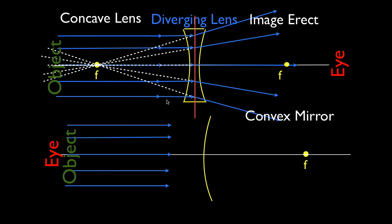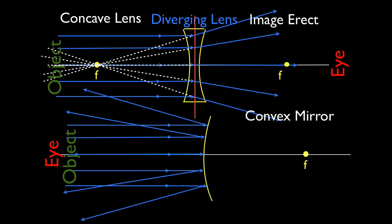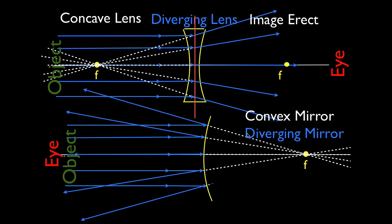Now let's do the same thing with the convex mirror. The light rays strike that mirror and they're reflected so that they diverge away from each other — so a convex mirror is also known as a diverging mirror. Your eye takes those light rays in; it does not know they were reflected, so it assumes they traveled in a straight line. They will appear to come from the focal point. How much should they diverge? They have to diverge so that they can be drawn in a straight line back to the focal point. The focal point for a diverging mirror is behind the mirror.